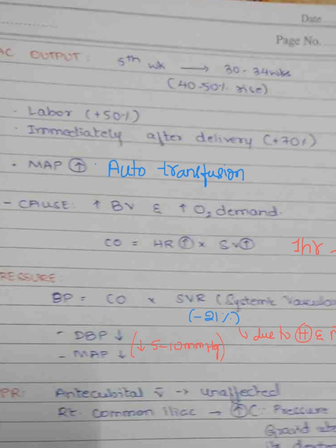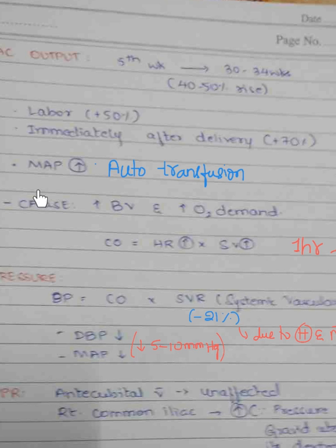Blood pressure equals cardiac output multiplied by systemic vascular resistance (SVR). There is a decrease in SVR during pregnancy due to hormonal effects, muscular effects, and hemodilution. This decreases the blood pressure of the pregnant mother. Diastolic blood pressure and mean arterial pressure decrease by approximately 5 to 10 mmHg. Because the increase in cardiac output and the decrease in SVR counterbalance each other, there are very negligible net changes in mean arterial pressure during pregnancy.